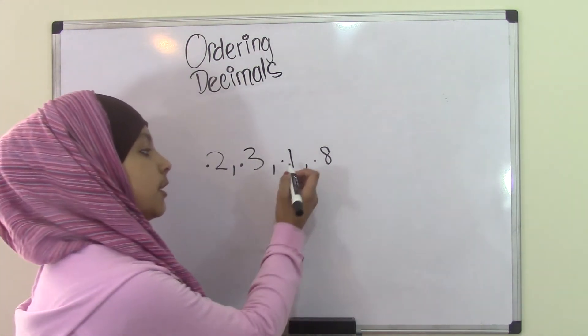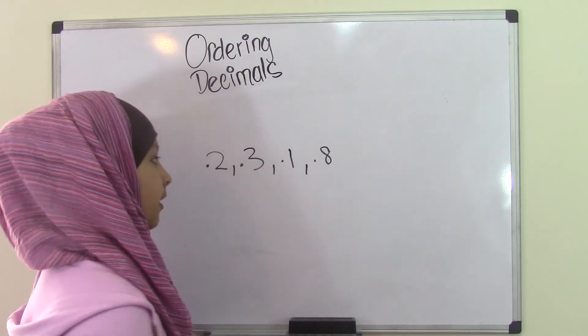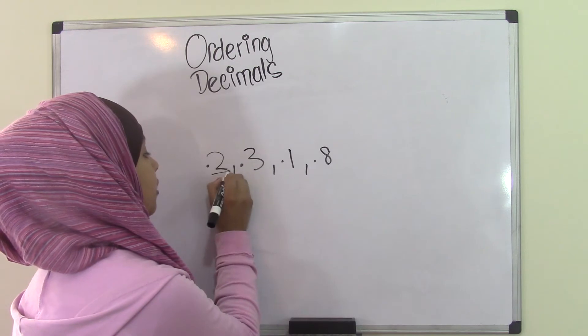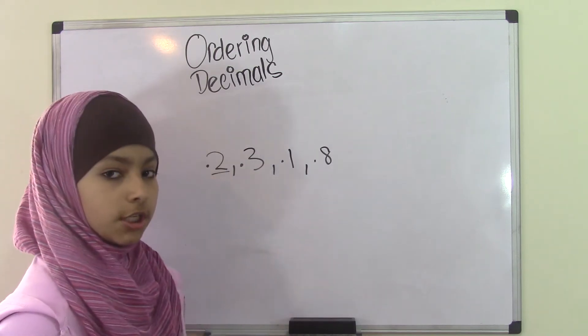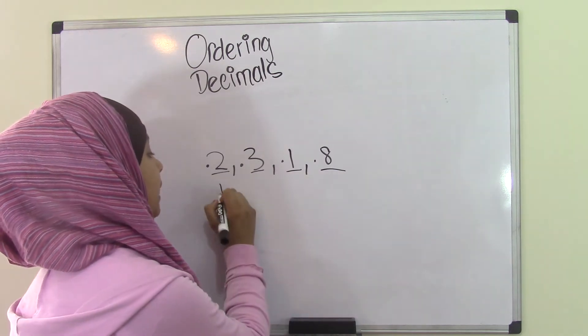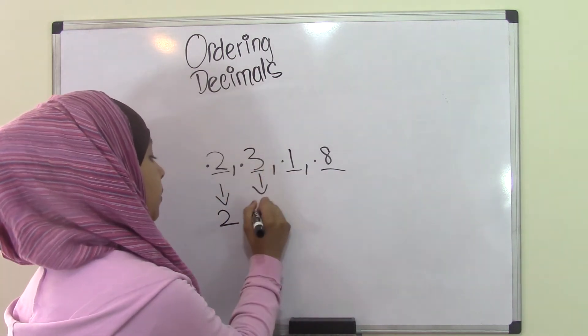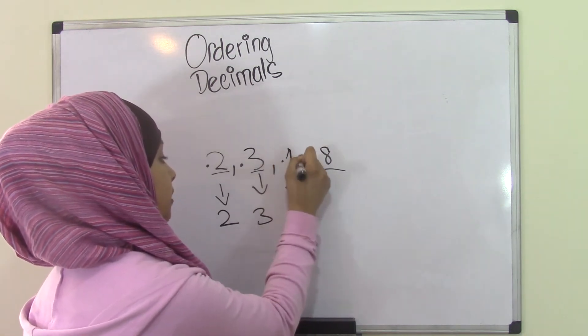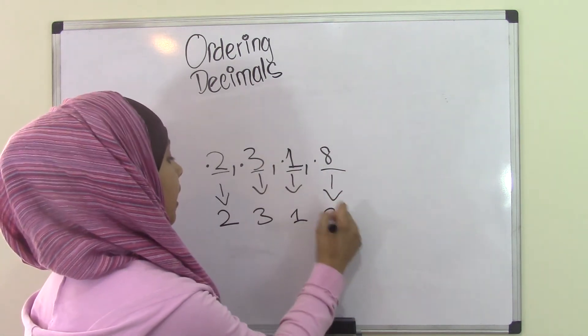First, use this simple method called take down the whole numbers, which means you'll just look at the digit after the decimal point and underline it, then break it down. So this will become 2, this will become 3, this will become 1, and this will become 8.